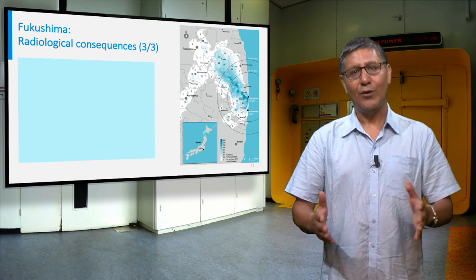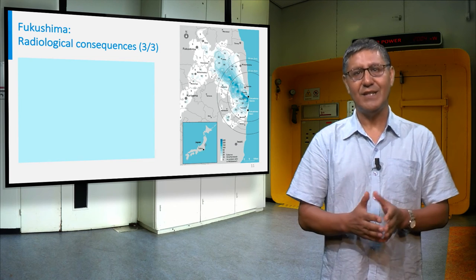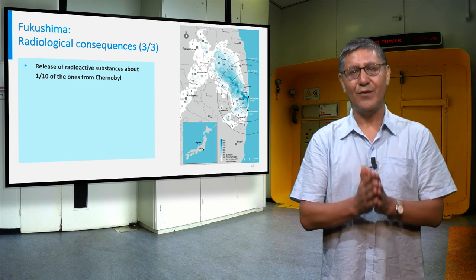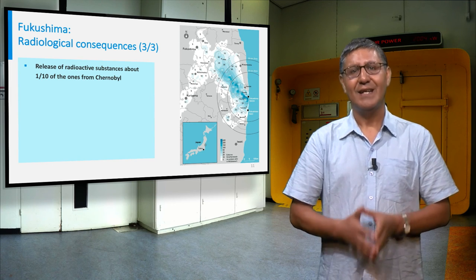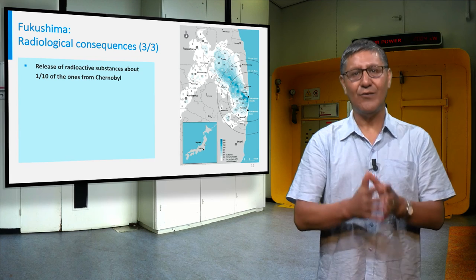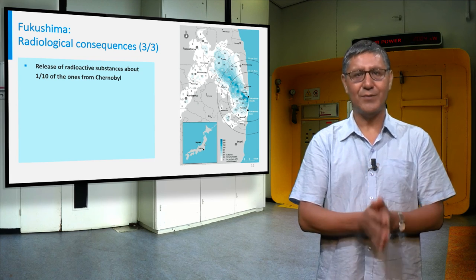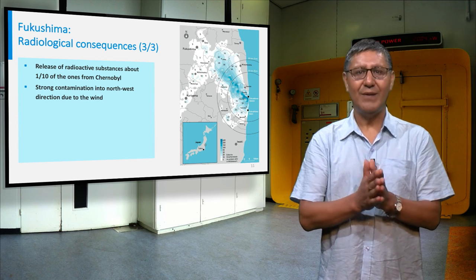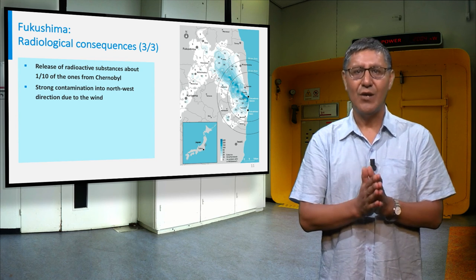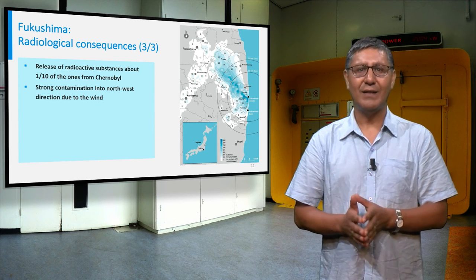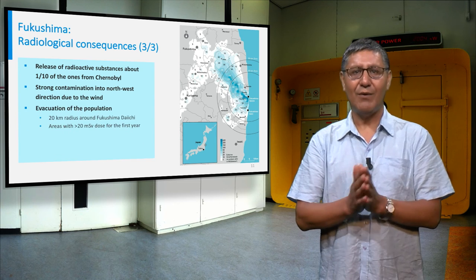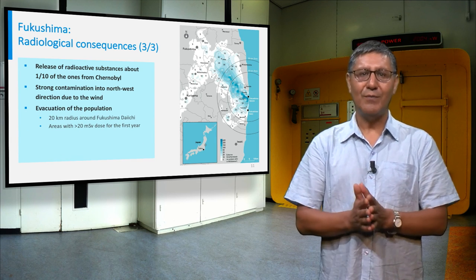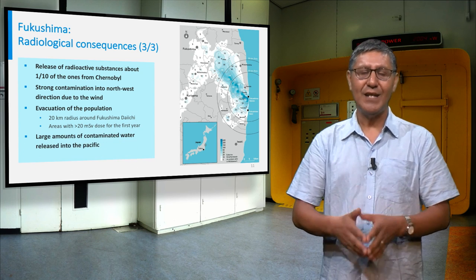The radiological consequences of the Fukushima accident were only 10% of those from the Chernobyl accident, since the reactor pressure vessel was not severely damaged. However, strong contaminations were detected to the northwest of the power plant, and many people have been evacuated and relocated. Large amounts of contaminated water were also released into the sea.